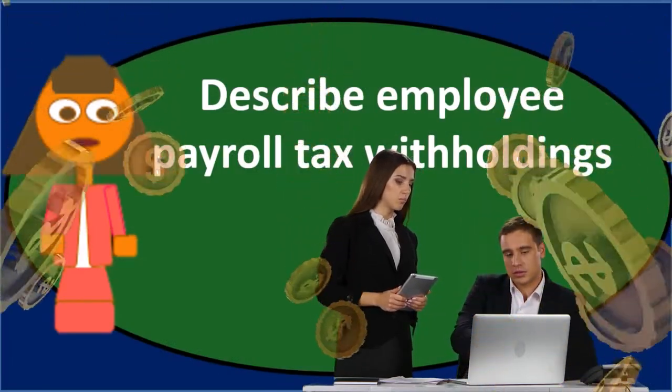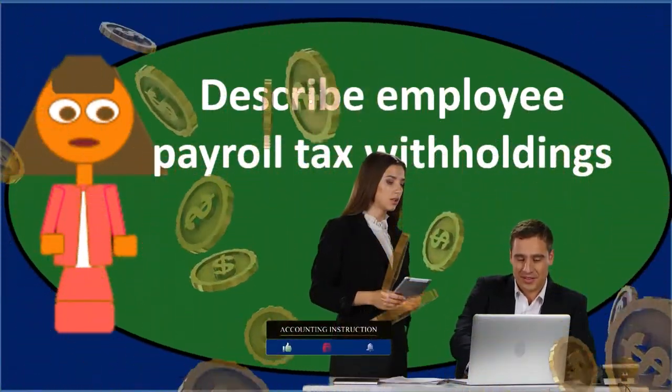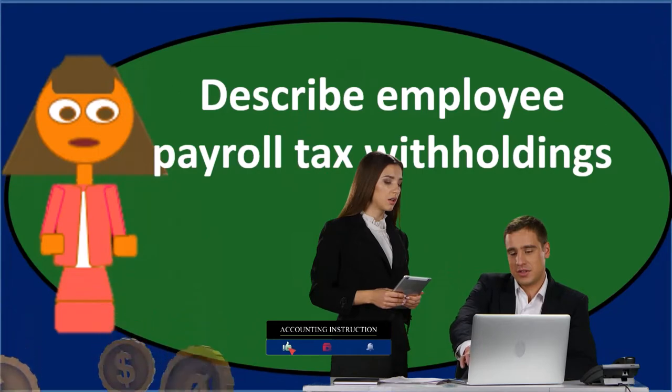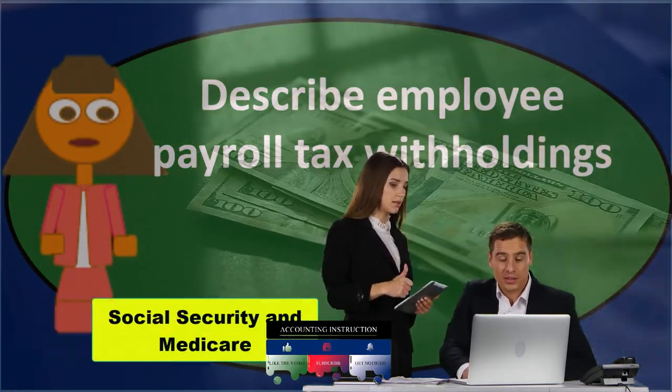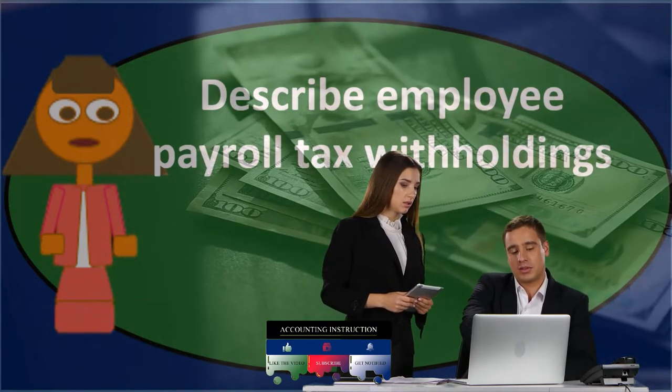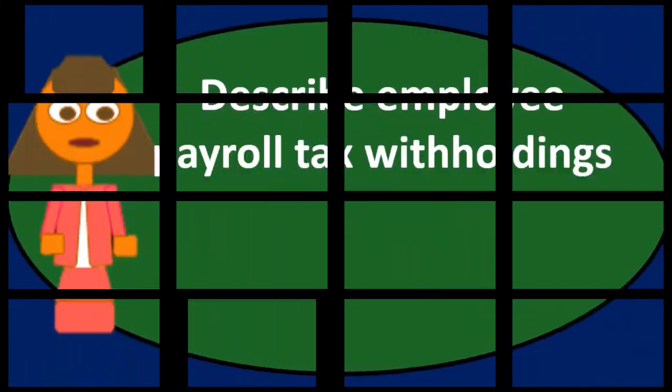Then we have social security, which is a tax that has a cap. It's typically 6.2% of wages. Social security wages could differ from total wages — for example, they might be reduced by a cafeteria plan. FIT wages could similarly be less than total earnings due to a cafeteria plan or a 401(k) plan, if the employee has those options.